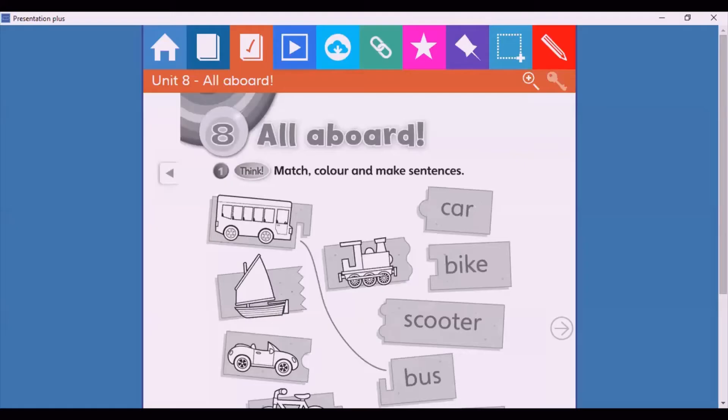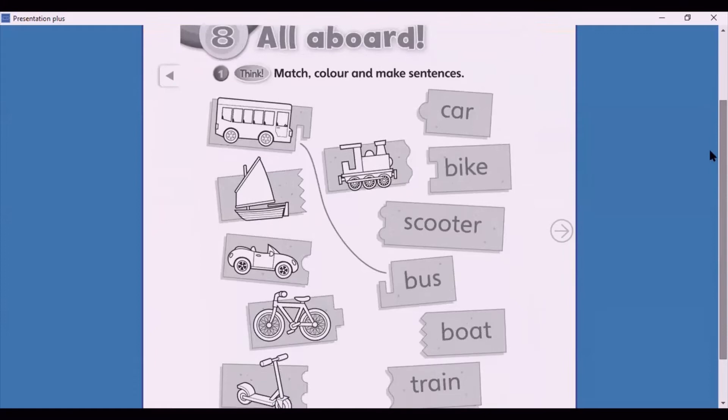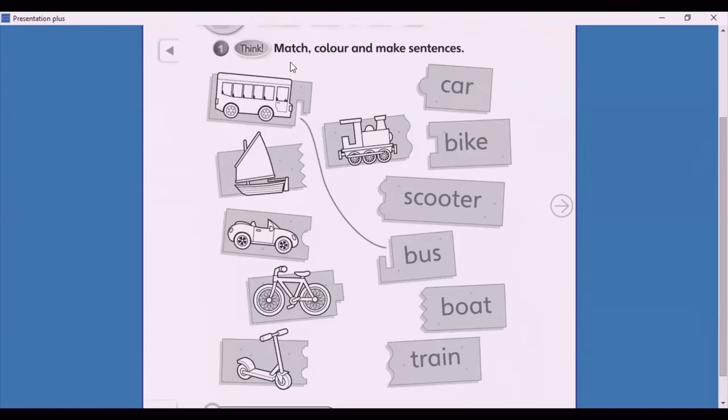So this is the activity. Number one: match, color, and make sentences. Look at the pictures and words. You have to match the word to the picture, like this. Bus, find the bus and match, then you have to color.